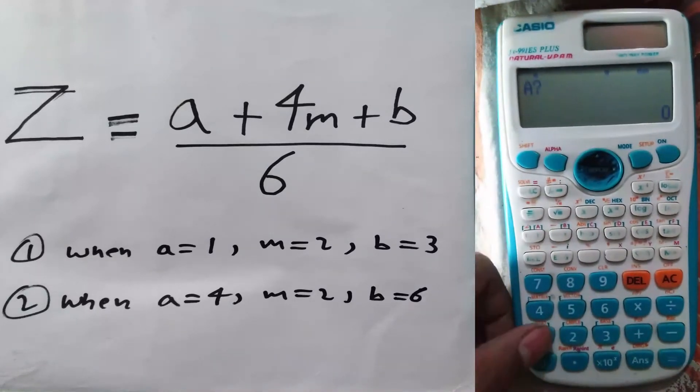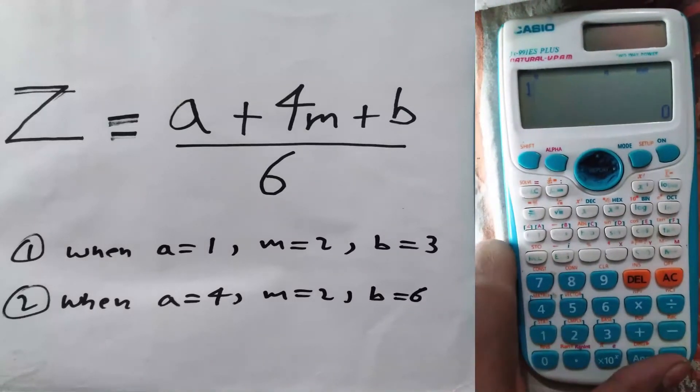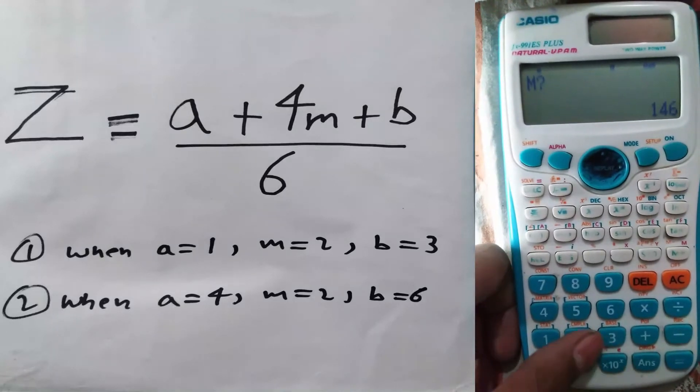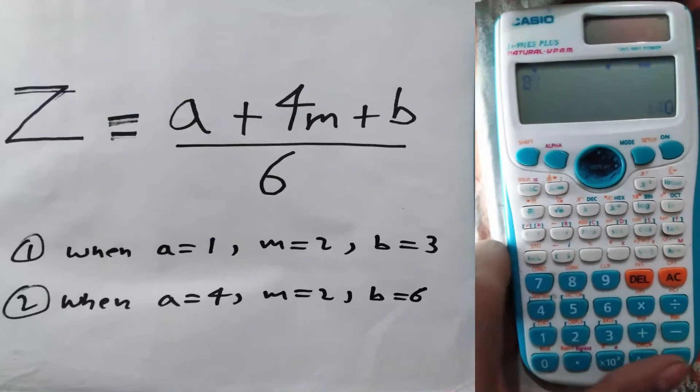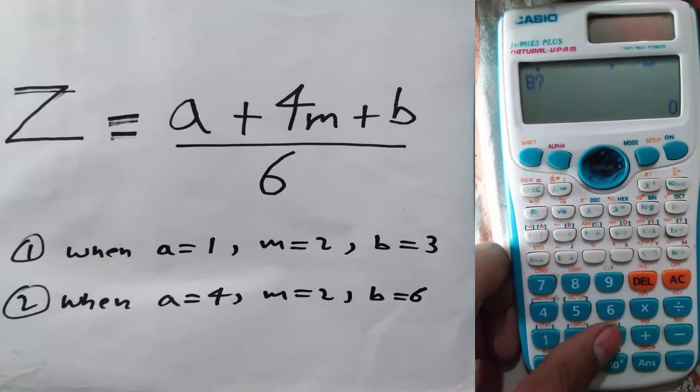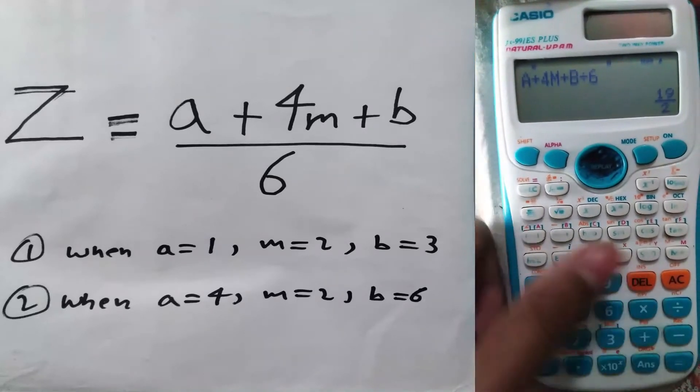I will give the a as 1, m as 2, and b as 3. So I have this answer of 19 upon 2.